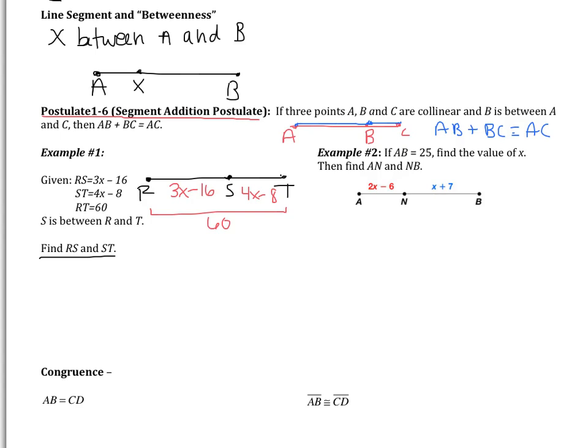I know RS is 3X minus 16. I know that ST is 4X minus 8. I'll have numerical answers then for RS and ST if I find X. So the first thing that I need to do is find X and then substitute it back in. I'm going to use the Segment Addition Postulate. I know that RS and ST is going to give me RT. So add the two smaller parts, it's going to give me the bigger part. So RS is 3X minus 16, ST is 4X minus 8, and that's going to be equal to the entire segment, which is 60. Now we're going to combine like terms. 3X and 4X is going to give me 7X. Negative 16 and negative 8 is going to be negative 24. So I get 7X minus 24 equals 60. Add 24 to both sides. I get 7X equals 84. If I divide by 7, I get X equals 12.